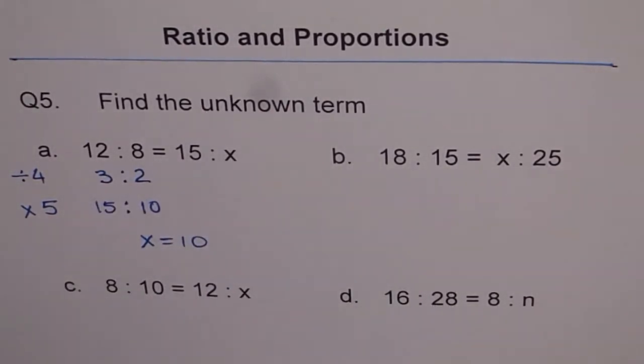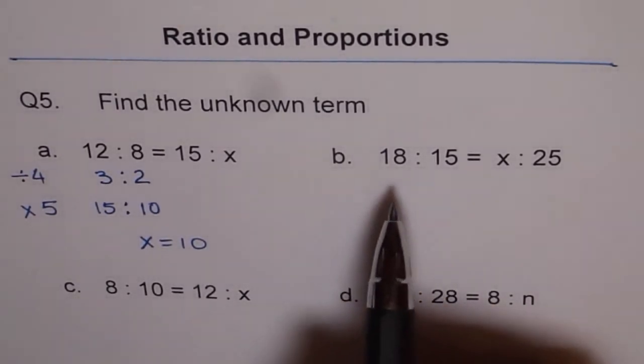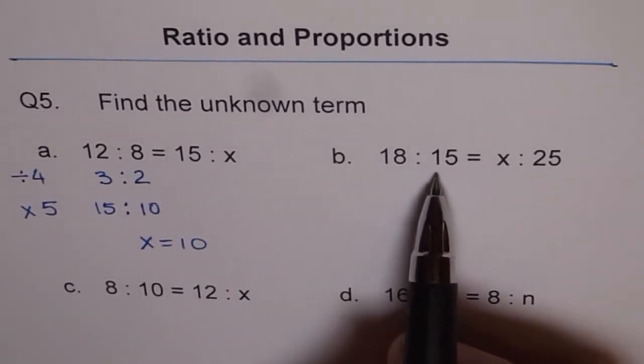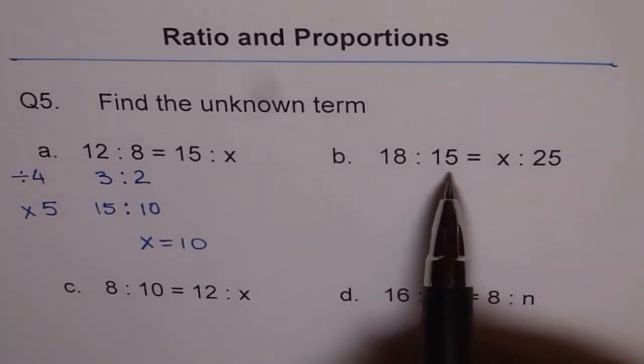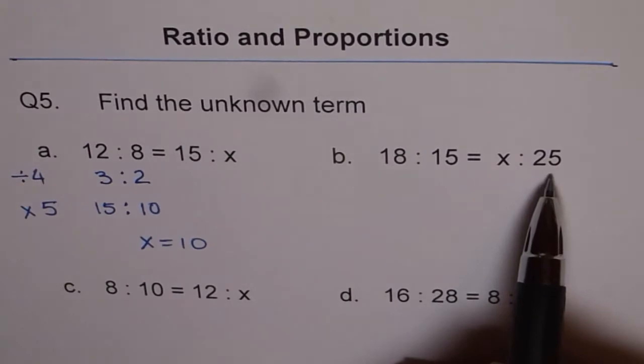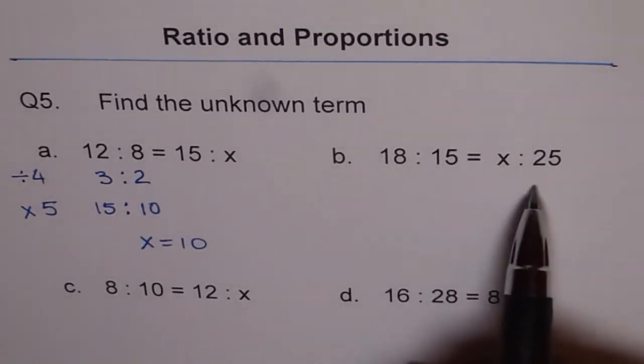So that is how we are going to do such questions. Let's look at one more example. 18 is to 15 equals to X is to 25. Now from 15 to 25, we can't go directly. There is no scale factor.